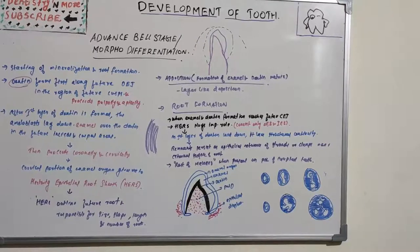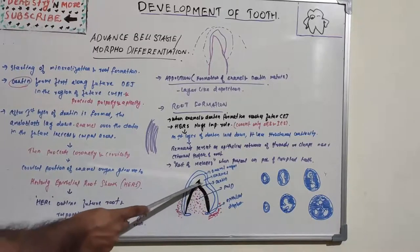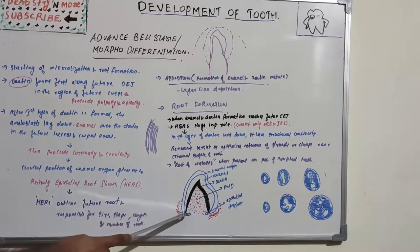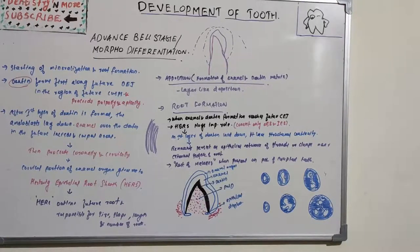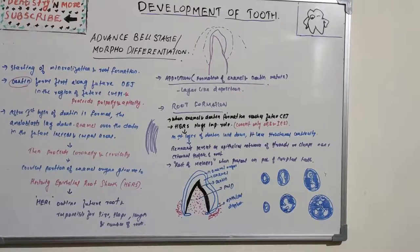Root formation begins once enamel and dentine formation has reached the future cemento-enamel junction (CEJ). The enamel organ plays a critical role in root development by forming Hertwig's epithelial root sheath (HERS), which models the shape of the root. HERS consists only of the outer enamel epithelium and inner enamel epithelium.